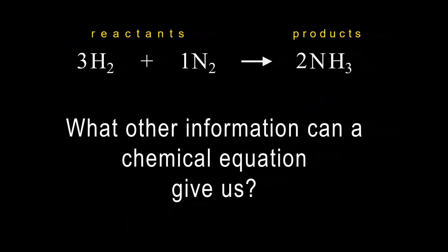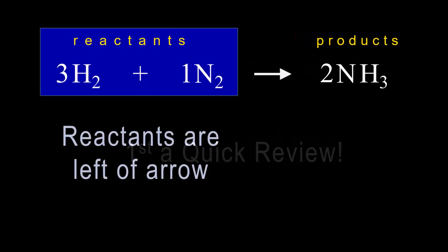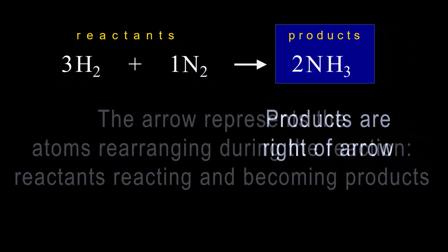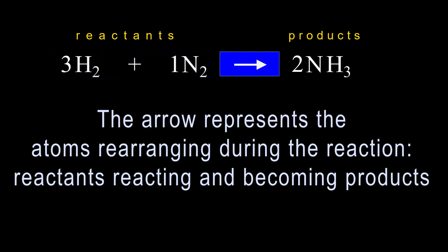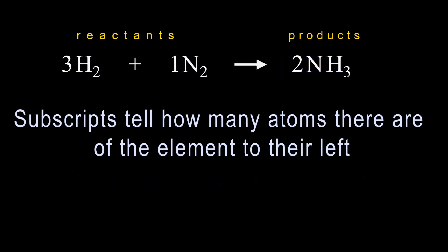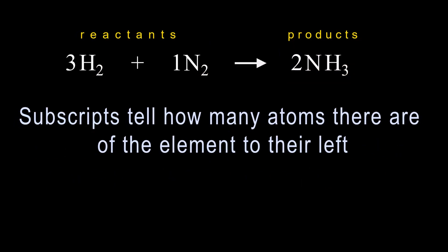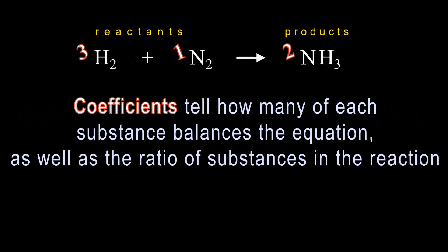So what other information can a chemical equation give us? First, a quick review. Reactants are on the left side of the arrow. Products are on the right side of the arrow. The arrow represents the atoms rearranging during the reaction, a symbol of the reactants reacting and becoming products. Subscripts tell us how many atoms there are of the element to their left. And coefficients tell how many of each substance balances the equation as well as the ratio of substances required by the reaction.